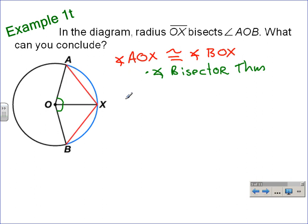So we'll conclude that segment AX, or chord AX, is congruent to segment BX, and that's because of theorem 12.4 part one. Remember, theorem 12.4 part one says within a circle or in congruent circles, congruent central angles have congruent chords.